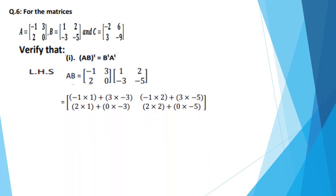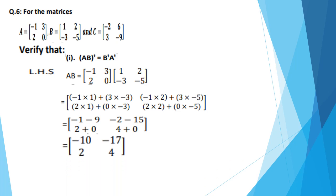For left hand side AB: multiply first row with first column, first row with second column, second row with first column, second row with second column. After multiplying the numbers, you get: minus 1, minus 9, minus 2, minus 15, 2, 0, 4, and 0. Adding the numbers: minus 1 minus 9 equals minus 10; minus 2 minus 15 equals minus 17; 2 plus 0 equals 2; 4 plus 0 equals 4.